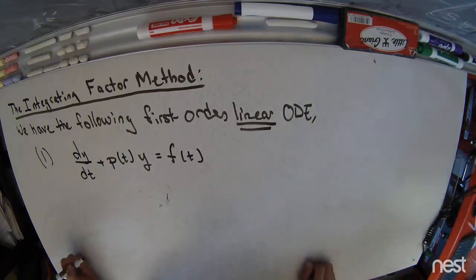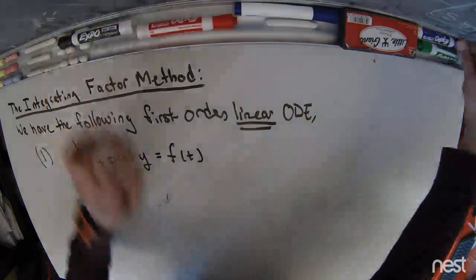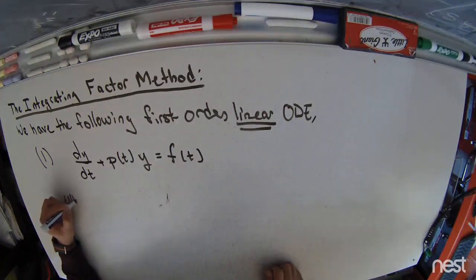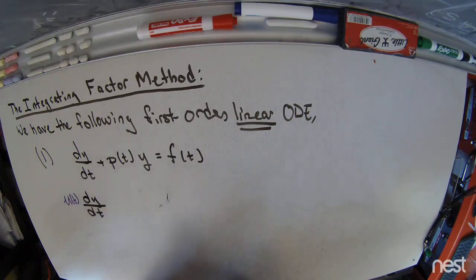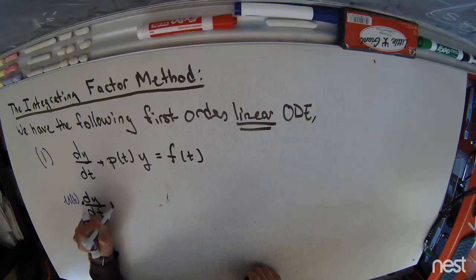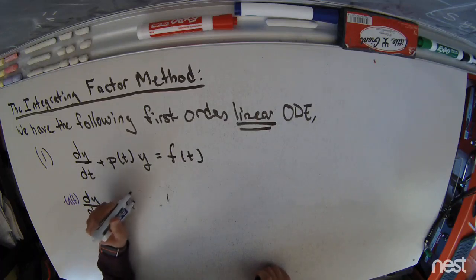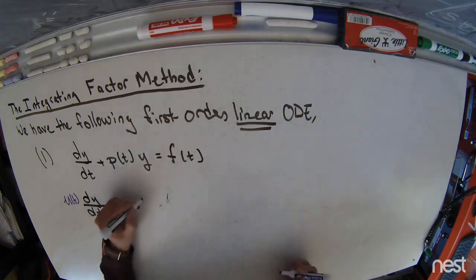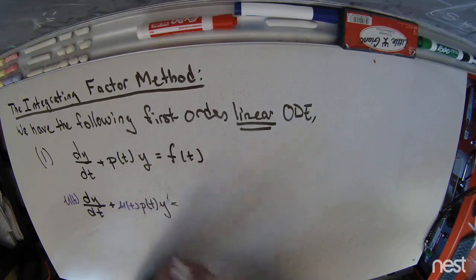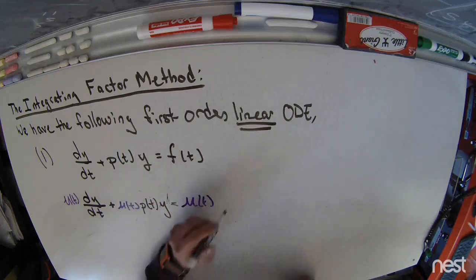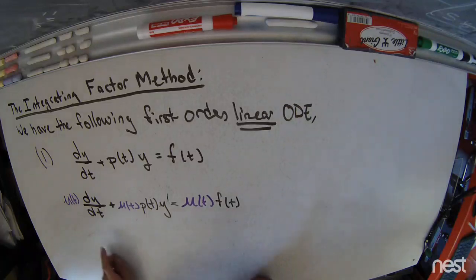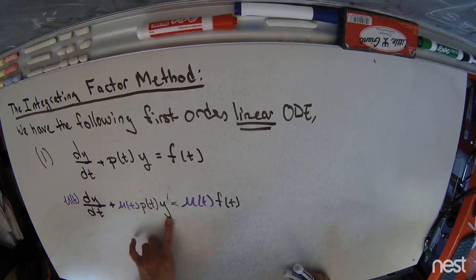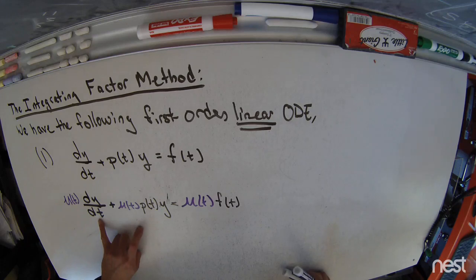The whole idea is that we are going to multiply this equation through by an unknown factor μ(t), which we will call the integrating factor. Multiplying through by this μ(t) leads to an equation where we can notice the emergence of a product rule-like structure: here I'm leaving y alone, and here I'm taking the derivative with respect to time of y.